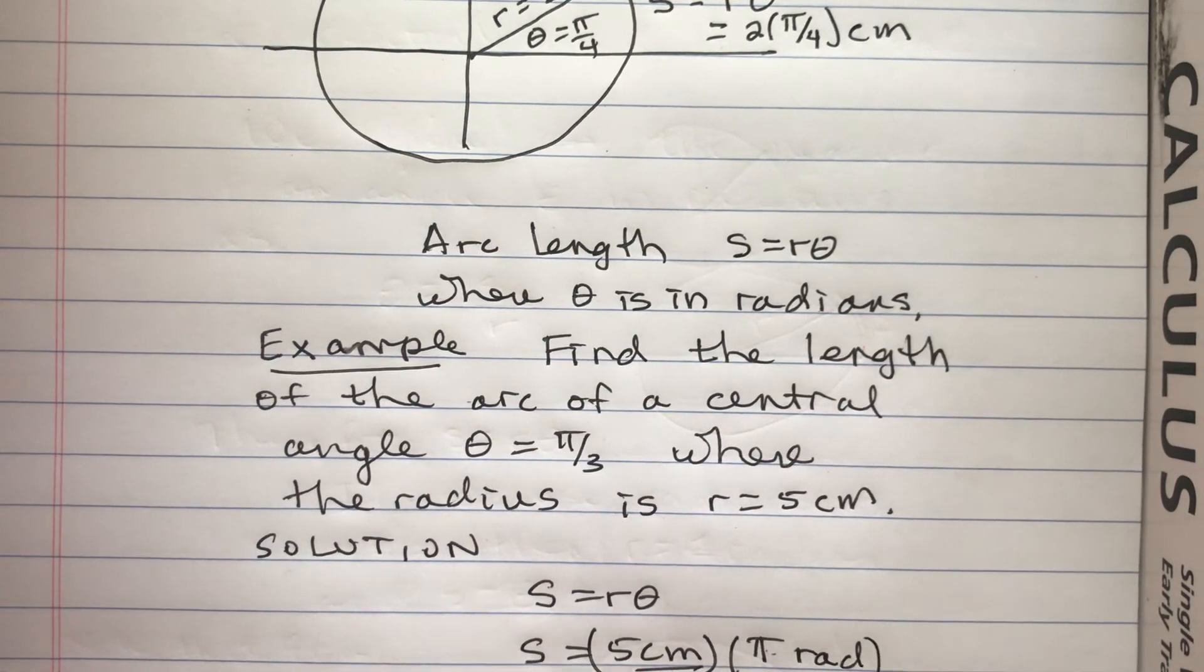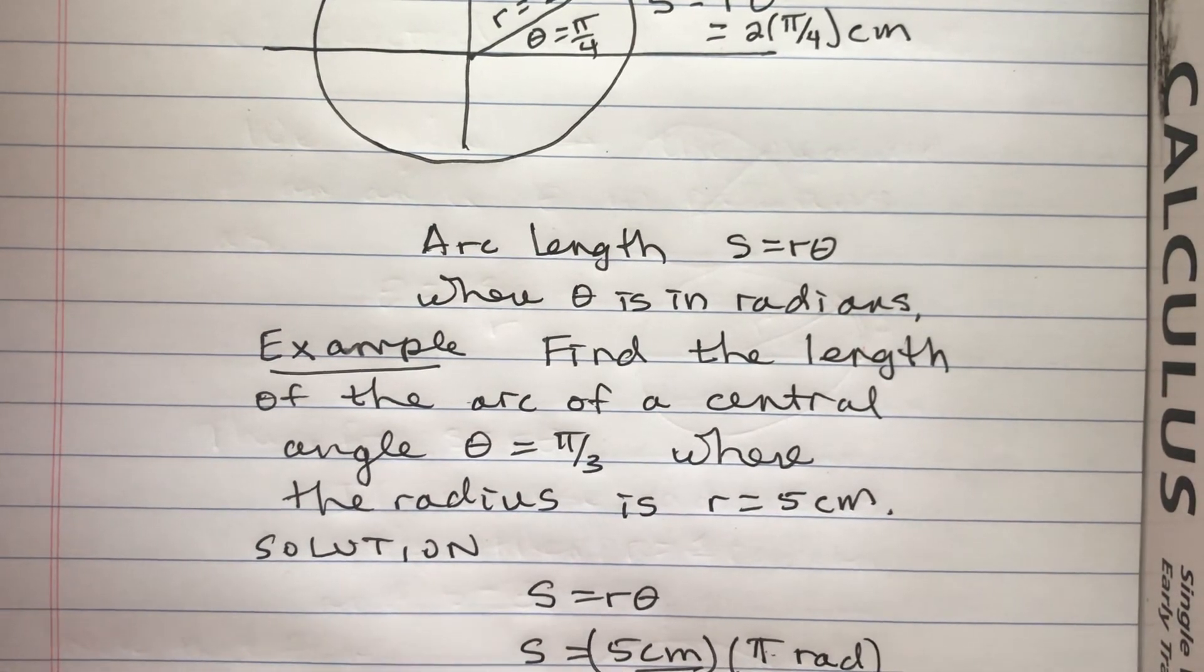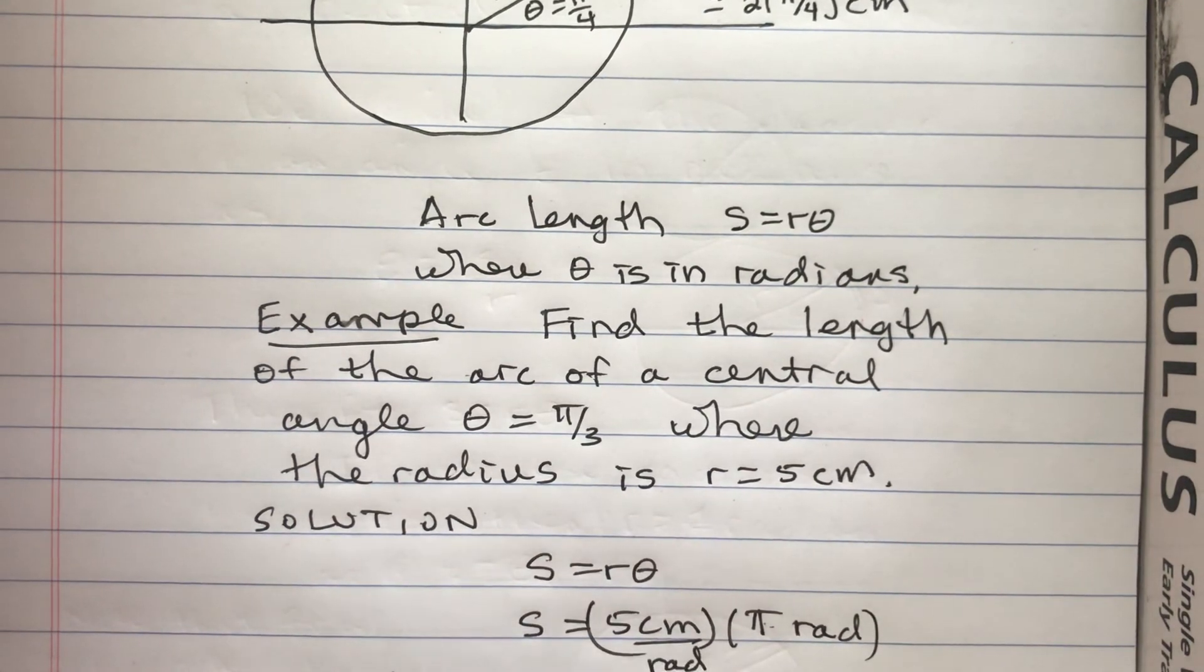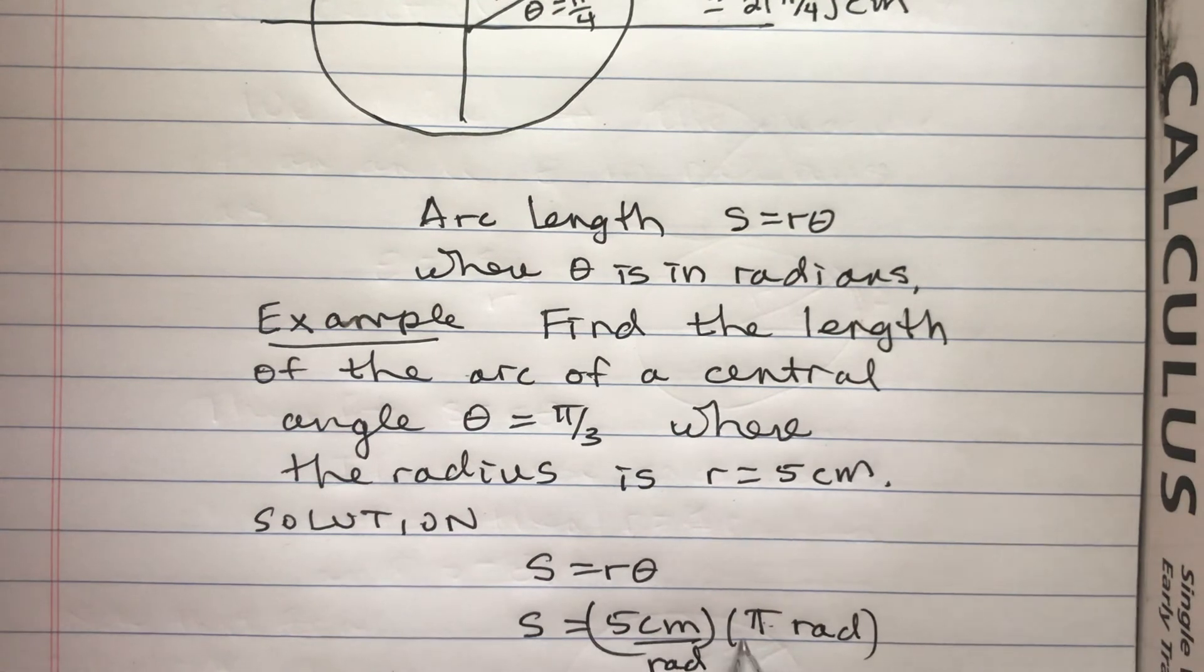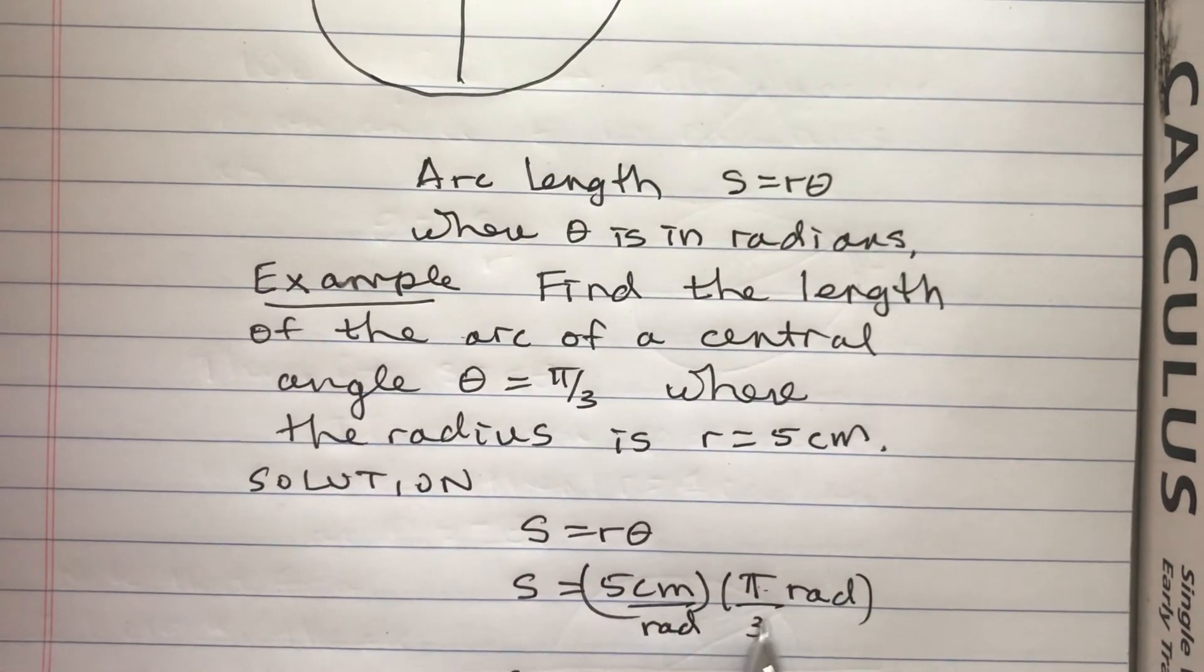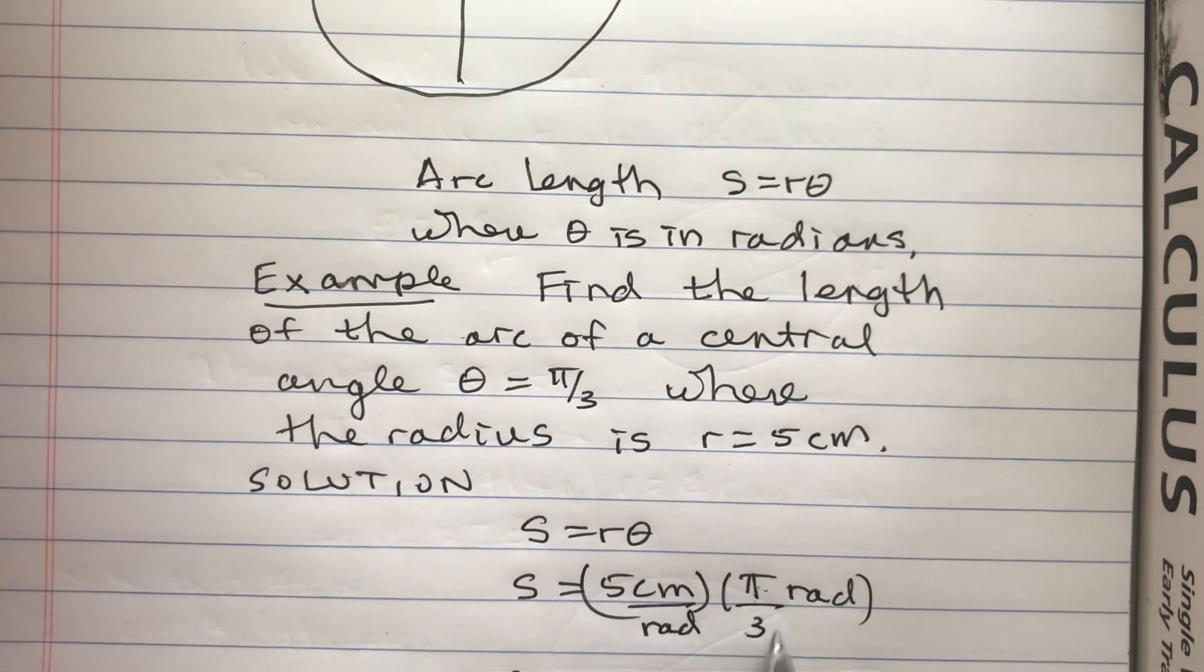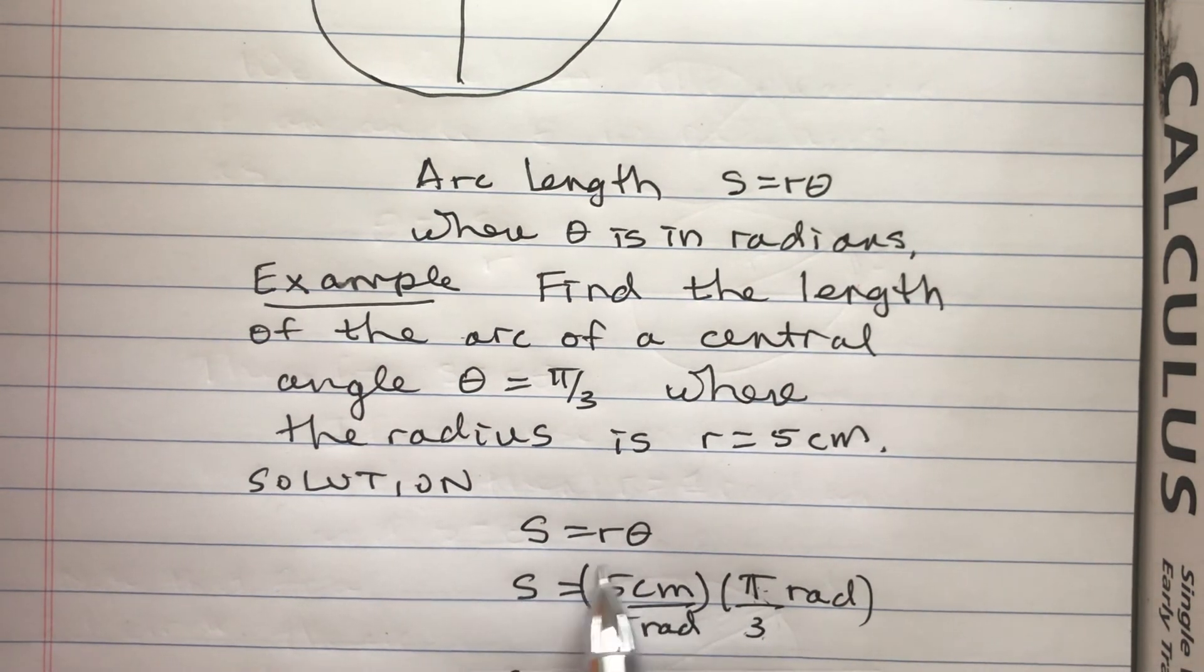So that's going to be 5 pi over 3 centimeters. So in radians, the arc is pi over 3 radians. If I'm using the units of radians, but if I want to convert to centimeters, I have to look at, well, each radius has 5 centimeters, which means 5 centimeters per 1 radian.